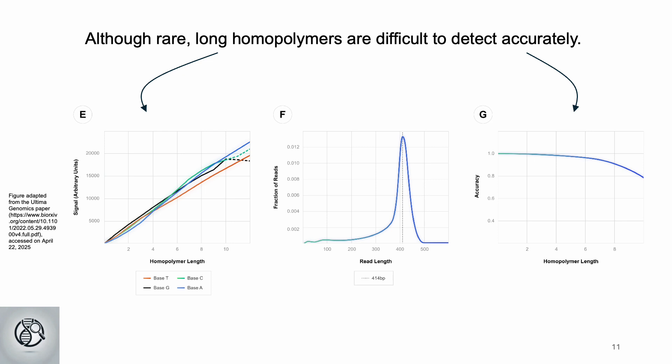Ultima is working to improve this, but long homopolymers are rare in the human genome.